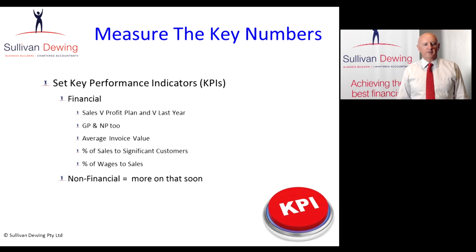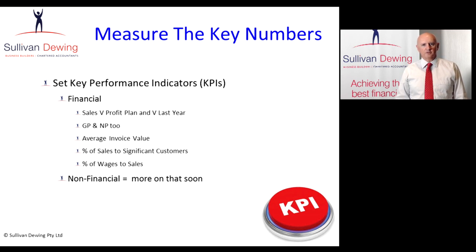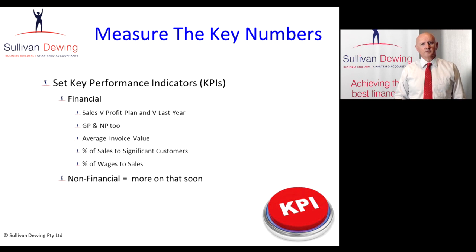First of all, there are financial KPIs and then non-financial KPIs — we'll talk about the non-financial ones later on. The most simple financial KPI is sales: sales versus your profit plan for this month, and sales versus the actual sales you made for this month last year. We also want to track gross profit this month versus the plan and versus last year, and similarly for net profit.